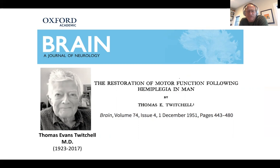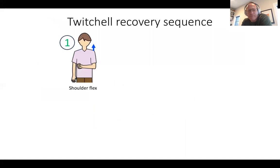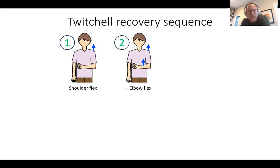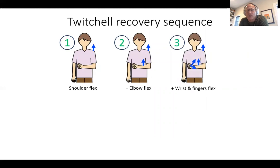Synergies were first really described over the natural history of recovery by Thomas Twitchell in his famous 1951 paper, where he delineated the sequence of motor recovery in patients from initial plegia through to normal movements. In his recovery sequence, you start off plegic — stage zero — then stage one where the shoulder is flexed, and stage two where you also have elbow flexion. This is the flexor synergy: when you try to move the arm, you get flexion around the shoulder and elbow. It can proceed to movement at the wrist and fingers, but these are also in flexion — the full flexor synergy, with flexion at shoulder, elbow, wrist, and fingers.